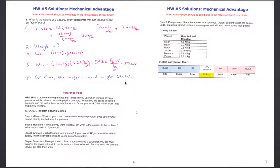Finally, a throwback problem: what is the weight of a 123,000 gram spacecraft that has landed on the surface of Mars? Mass must be converted to kilograms: 123,000 grams ÷ 1,000 = 123 kilograms. Look up Mars gravity on the reference page: 3.2 Newtons per kilogram. Weight = mass × gravity = 123 kg × 3.2 N/kg. Kilograms cancel out, leaving Newtons — the correct units for weight. The spacecraft weighs 393.6 Newtons on Mars.